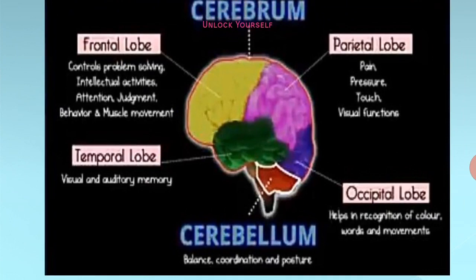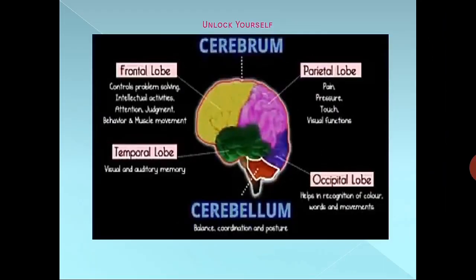The last is the occipital lobe, the smallest of all the lobes, whose boundaries are not as clear as the other three. The primary visual cortex is located in this lobe; hence it is responsible for processing visual input coming from the body and outside environment. It helps in the recognition of colors, words, and movement.